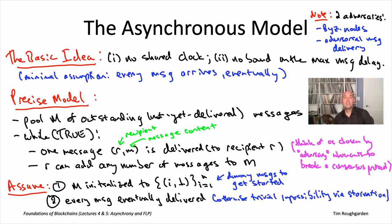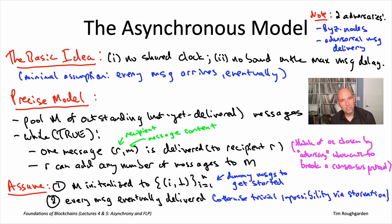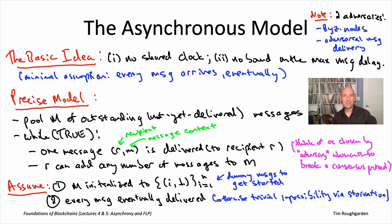That's the asynchronous model. Before we state the FLP impossibility result, I need to tell you what problem exactly is impossible. It's actually going to be a third notion of consensus — another very famous one called Byzantine agreement. I'll explain what that is in the next video.